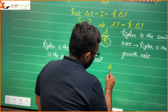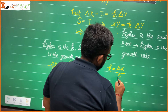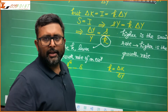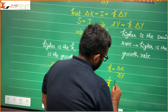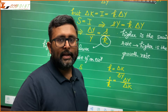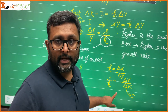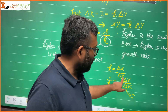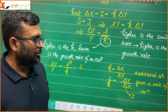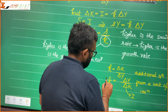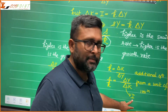This small k was delta K by delta Y. I can also write 1 upon k as delta Y upon delta K. If you look at it carefully, delta K is nothing but investment. So 1 upon k — this reciprocal of the capital-output ratio — is telling me how much additional output you can have from a unit of investment. How much additional output from a unit of investment? This is what 1 upon k is.